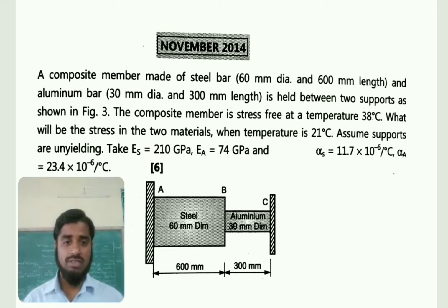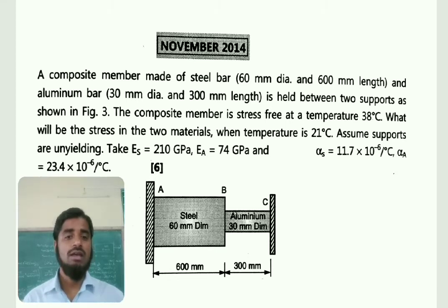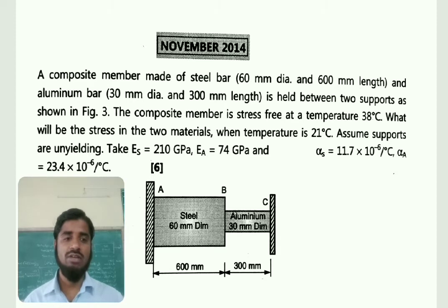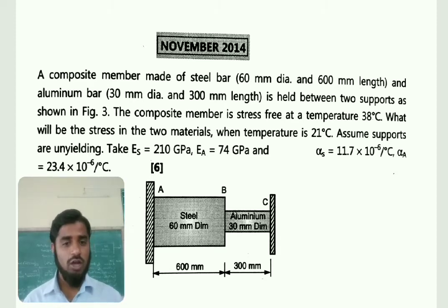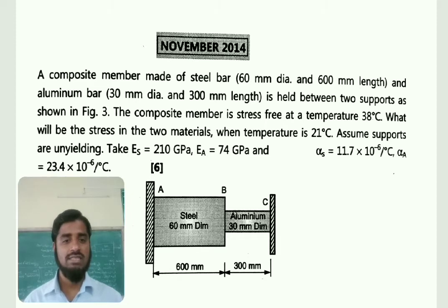Take E_S equal to 210 GPa, that is the modulus of elasticity for steel. For aluminium it is 75 GPa. The coefficient of thermal expansion alpha for steel is 11.7 × 10⁻⁶ per degree centigrade, and for aluminium is 23.4 × 10⁻⁶ per degree centigrade.